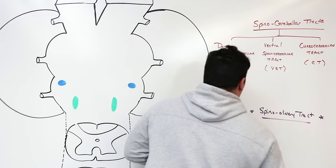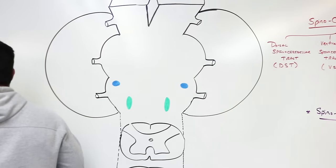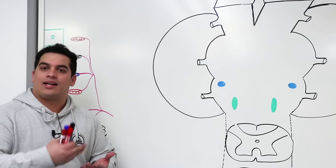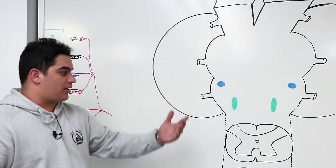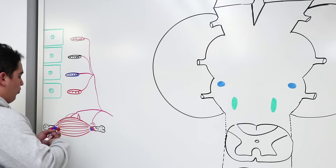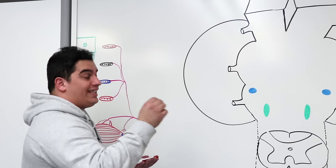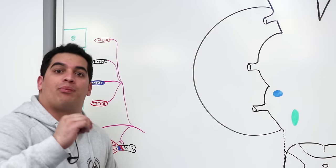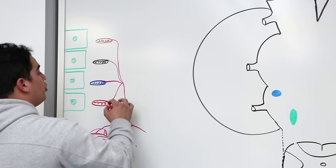Let's get started on the dorsal spinocerebellar tract. These are ascending tracts — a bundle of white matter axons moving in the central nervous system, going from the spinal cord to the cerebellum. To make it easy: pretty much all of the spinocerebellar tracts respond to proprioception.